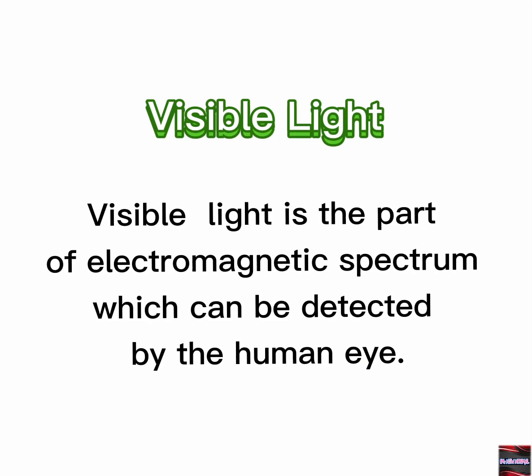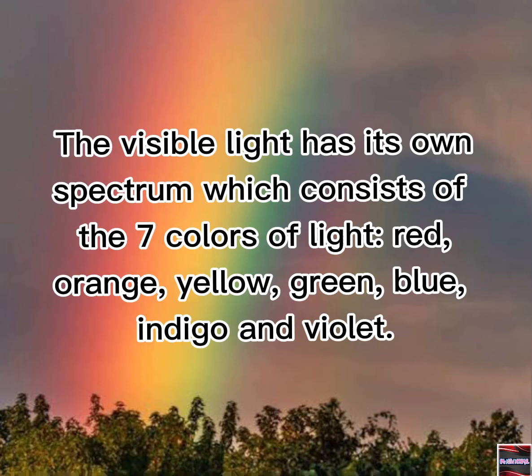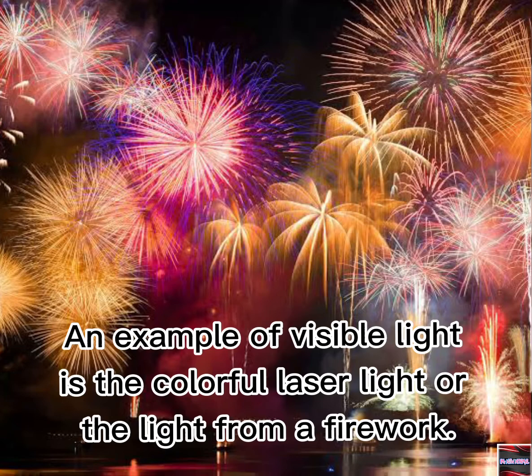Visible Light. Visible light is the part of the electromagnetic spectrum which can be detected by the human eye. The visible light has its own spectrum which consists of the seven colors of light: red, orange, yellow, green, blue, indigo, and violet. An example of visible light is the colorful laser light or the light from a firework.